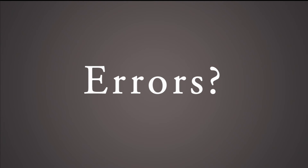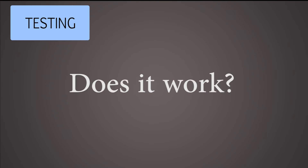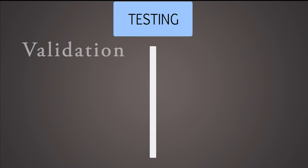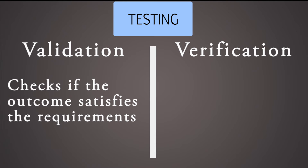But how do you make sure there are no errors in your code? That's where testing comes in. Software engineers test their program both during and after the coding process to check if it works. After coding, testing can be divided into two sub-phases: software validation and software verification. Software validation examines if the outcome of the coding process satisfies the requirements agreed on at the start of the process. Software verification tests if the software works accurately.